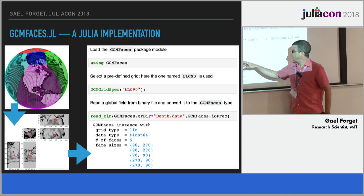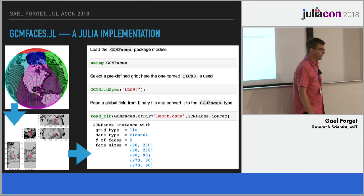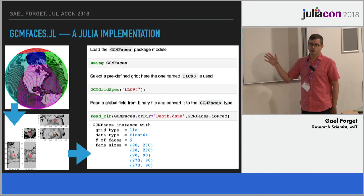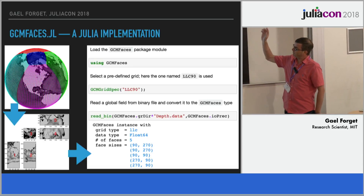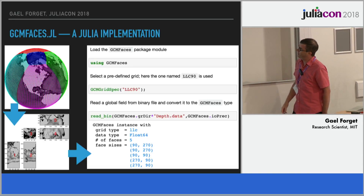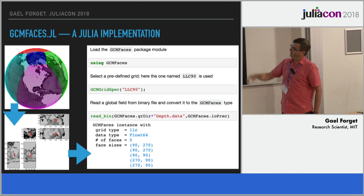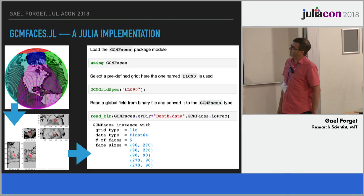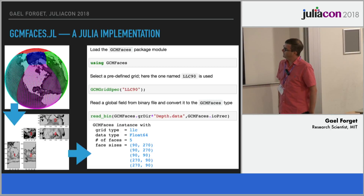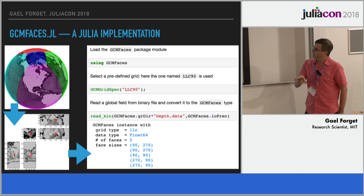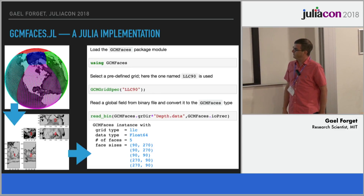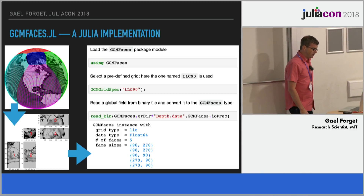The show method gives a data type for the individual elements on each face, which in this case is 64-bit, and the number of faces and the size of each face. The goal is to have something very simple to use. From a user standpoint, it comes down to: loading the module from this package, then loading a set of specifications for a predefined grid — my LLC grid — and a third line that takes a binary file, reads the content to memory, and converts it into an instance of the GCMFaces type.